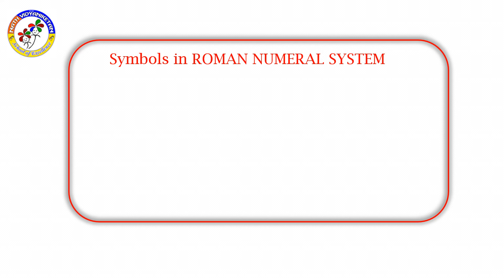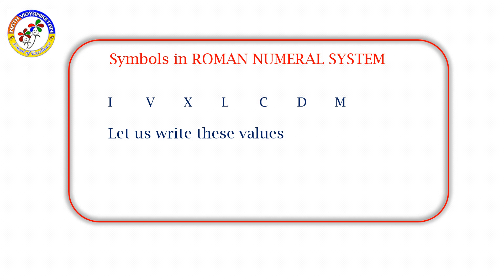Now, let us see symbols in the Roman numeral system. So, here are the symbols: I, V, X, L, C, D, M. Here letters are there. Let us write these values. I means 1. V means 5. X means 10. L means 50. C means 100. D means 500. M means 1,000. So, these are the values for the Roman numeral system.